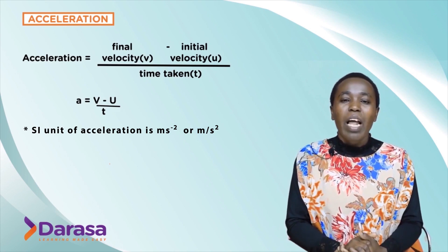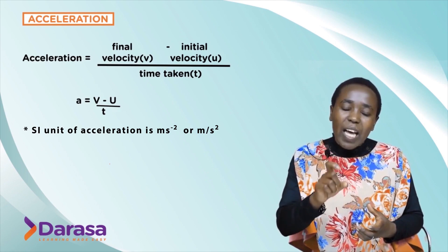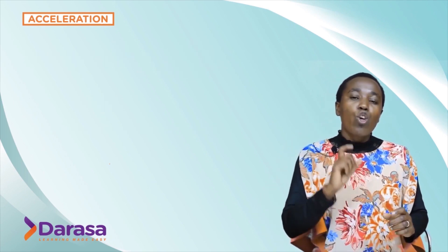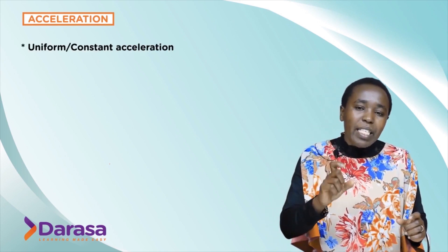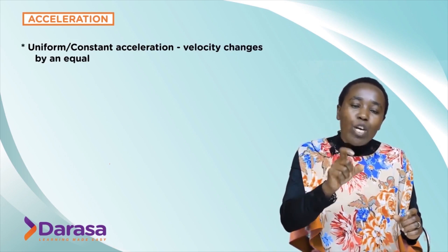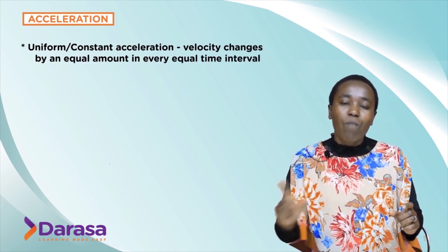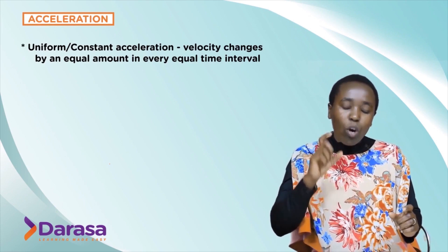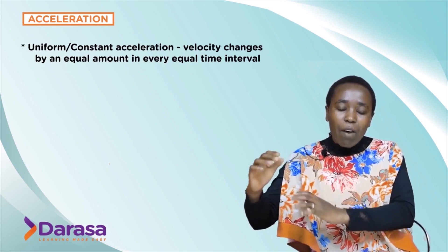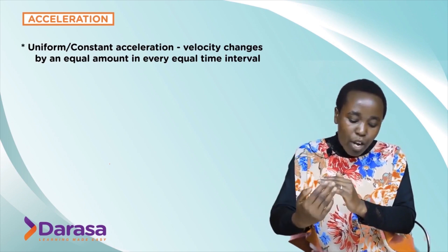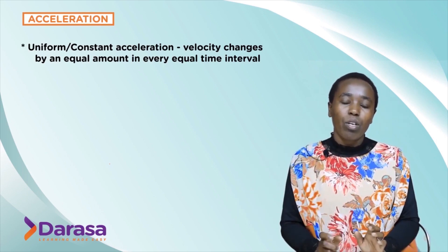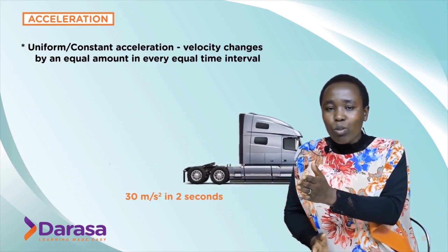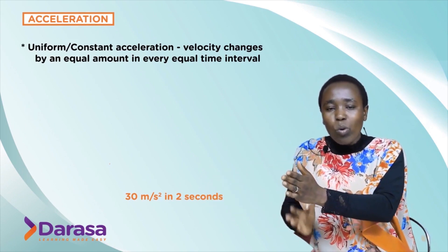A body can move at constant or uniform acceleration. Uniform acceleration means that velocity changes by an equal amount in every equal time interval. For example, if the velocity changes by 30 meters per second every 2 seconds, and this repeats consistently, the body is moving at uniform or constant acceleration.